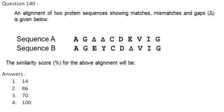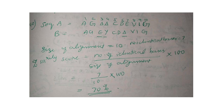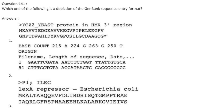An alignment of two protein sequences shows matches, mismatches, and gaps. Sequence A and Sequence B have 10 positions in the alignment. Number of identical bases is 7 out of 10. Similarity score = 7/10 × 100 = 70%. Answer is 70%.